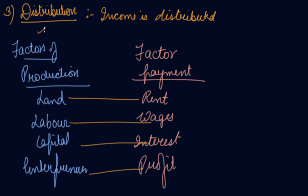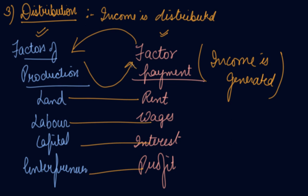So these are the factors of production, and these are the factor payments. In this way your income is generated. You are giving your factor inputs and in return the producer is giving you factor payments. So in this way the income is being distributed among the country. Labor is used as a factor of production and wages are given to them. This is how income is generated in the economy.